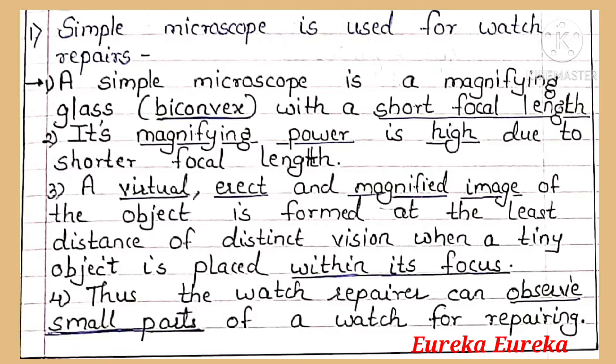Third, a virtual, erect and magnified image of the object is formed at the least distance of distinct vision when a tiny object is placed within its focus. And fourth, thus the watch repairer can observe small parts of a watch for repairing.